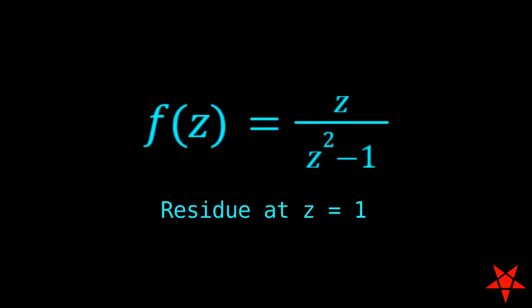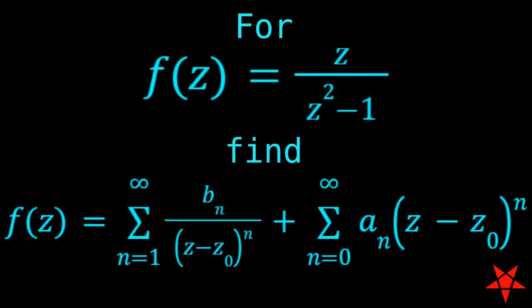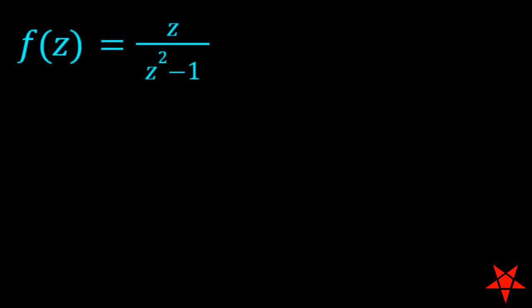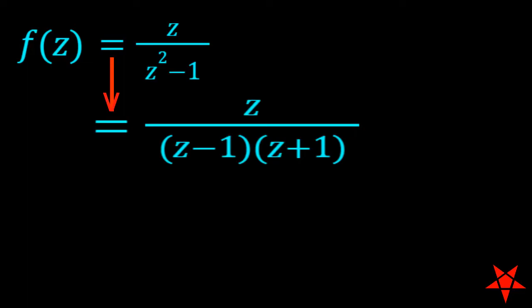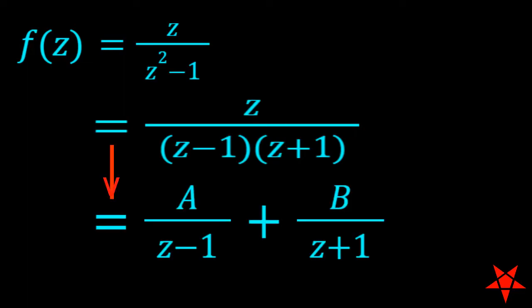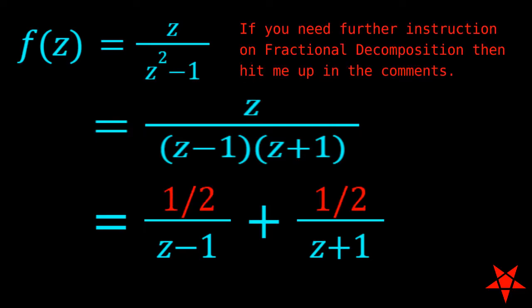Part B. For f of z equal to z over z squared minus 1, we are looking for the residue at z equal to 1 in the complex plane, and we will be doing this by calculating the Laurent series for f of z centered about z equals 1. As with part a, we will begin by breaking down the polynomial in the denominator before utilizing fractional decomposition in order to determine the coefficients of the 1 over z minus 1 and 1 over z plus 1 terms. A little bit of algebra, and voila, we have half 1 over z minus 1 plus half over z plus 1.